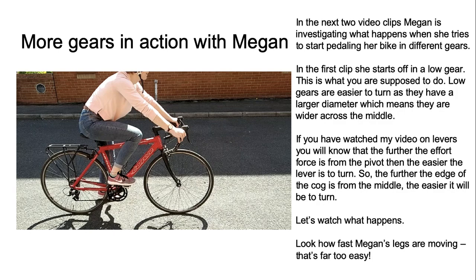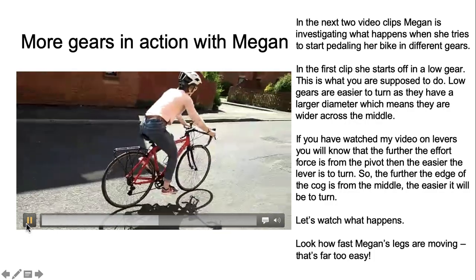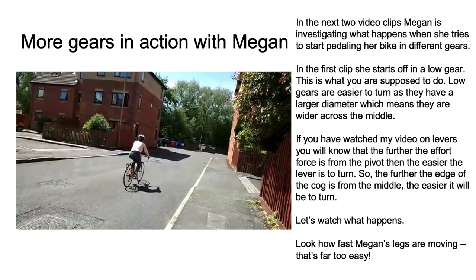More gears in action with Megan. In the next two video clips Megan is investigating what happens when she tries to start pedalling her bike in different gears. In the first clip she starts off in a low gear — this is what you're supposed to do. Low gears are easier to turn as they have a larger diameter, which means they're wider across the middle. If you've watched the video on levers, you'll know that the further the effort force is from the pivot, the easier the lever is to turn. So the further the edge of the cog is from the middle, the easier it will be. Look how fast Megan's legs are moving — that's far too easy!